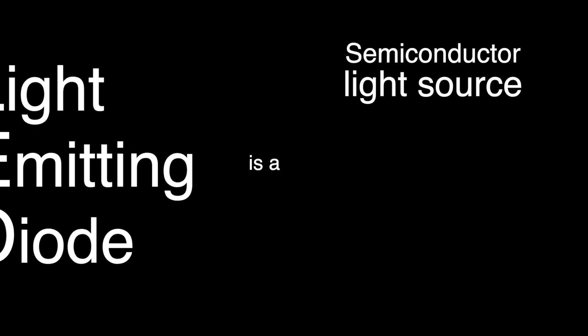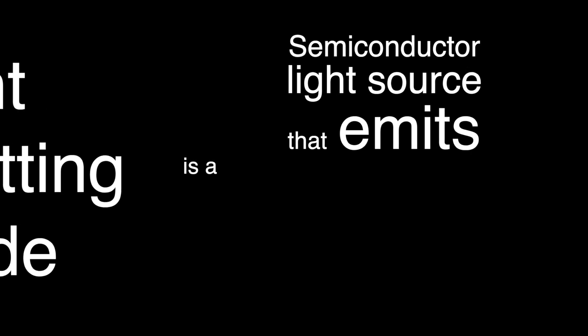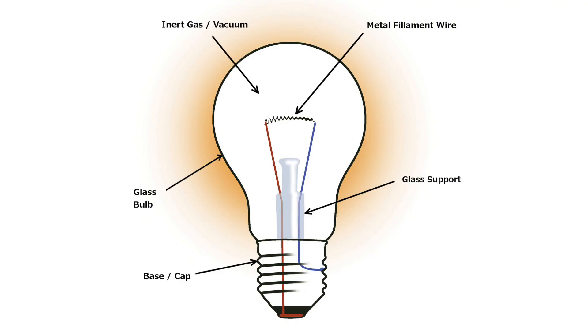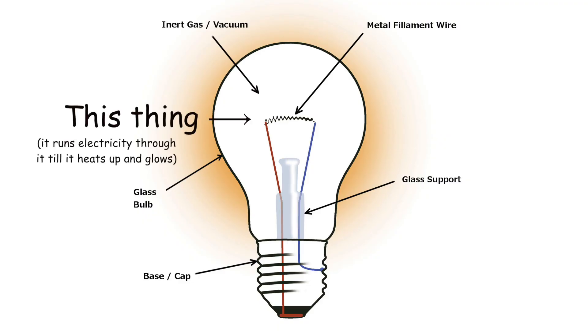An LED, or light emitting diode, is a semiconductor light source that emits light when current runs through it. A traditional light — let's say a tungsten light — has a filament inside of it and it runs current through that filament, heating it up until it glows, producing light.